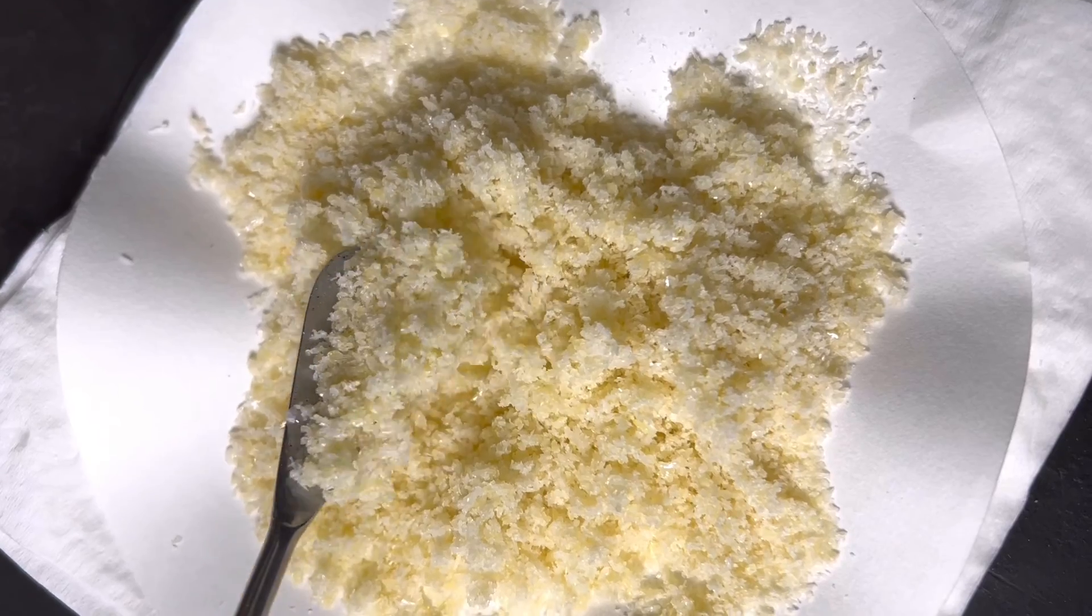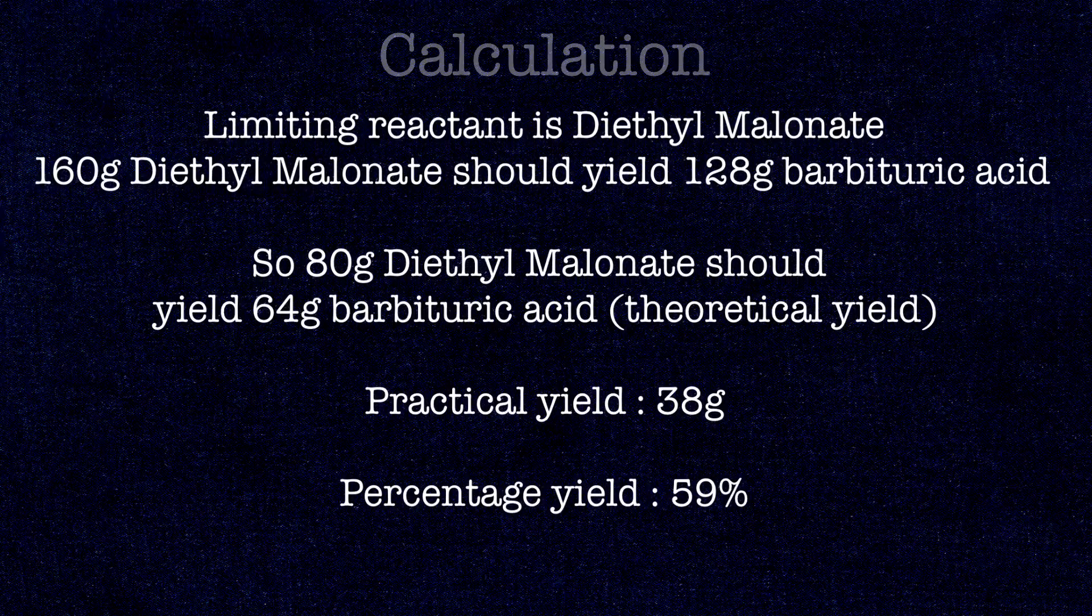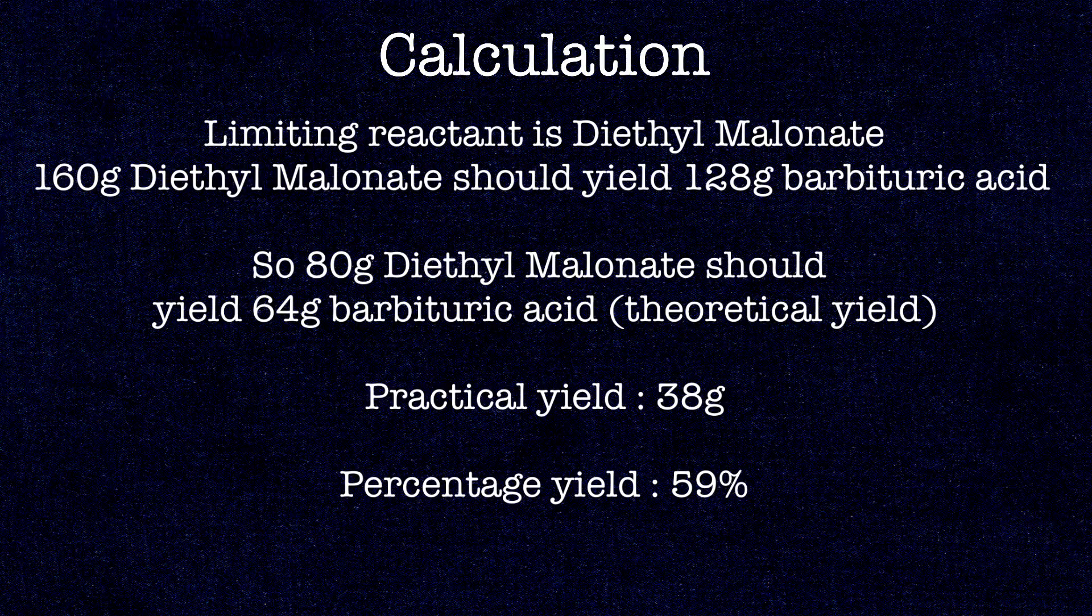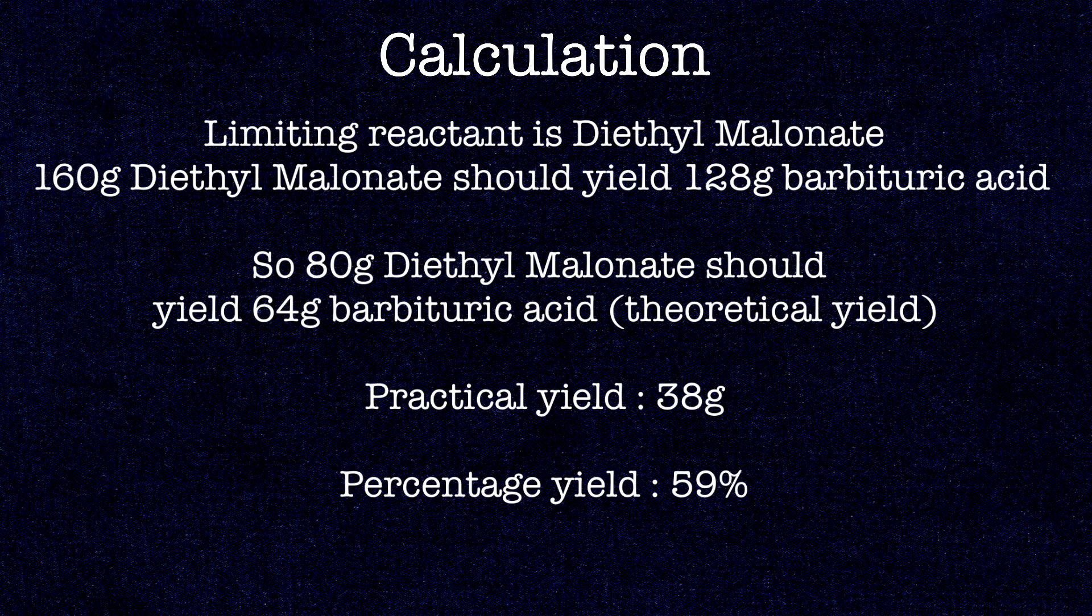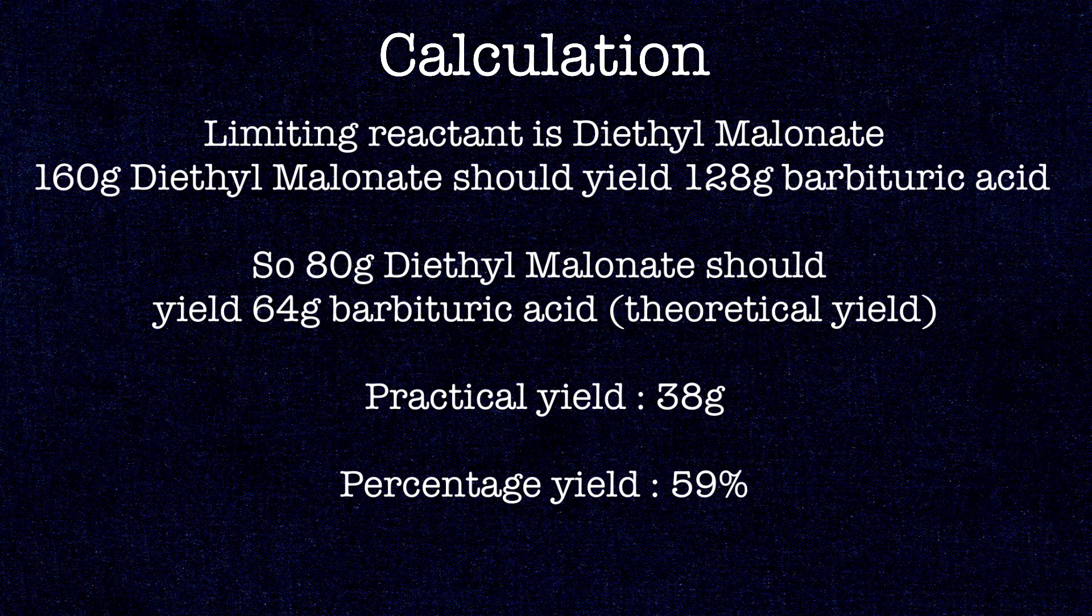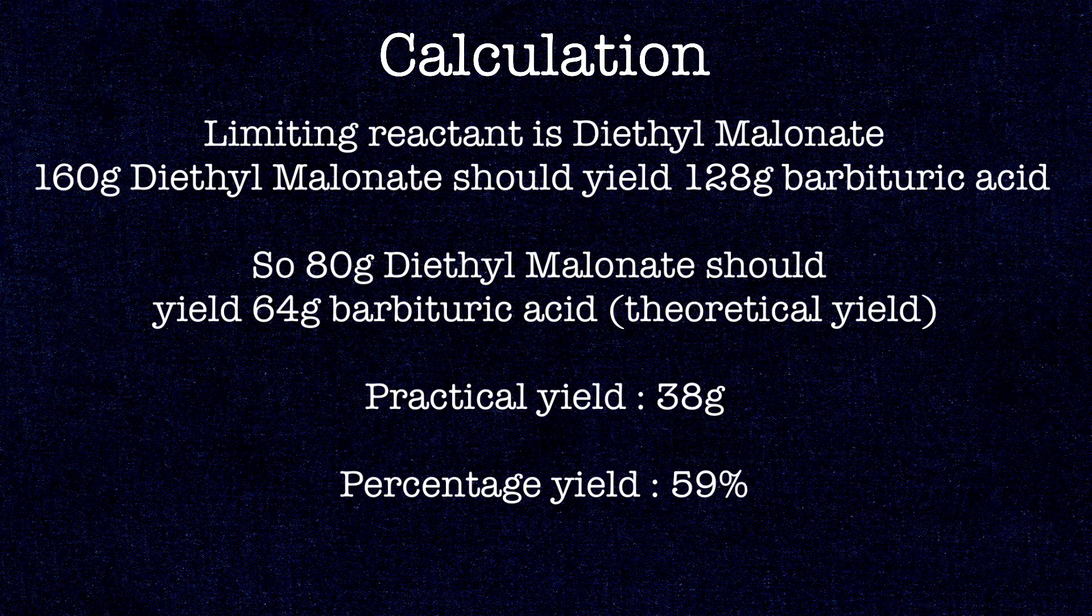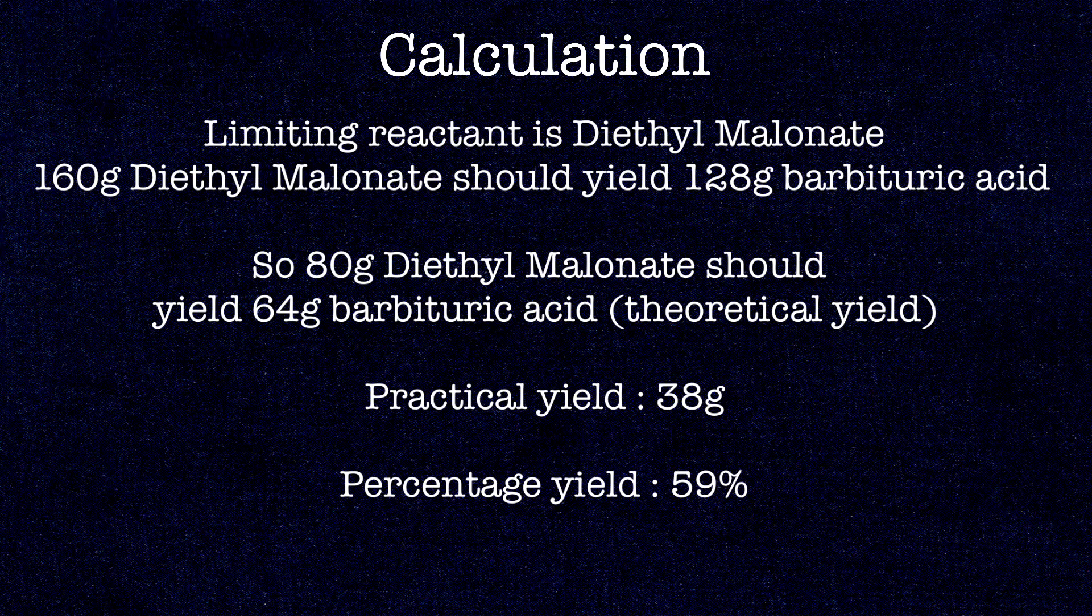Now let us move on to the calculation part. Diethyl malonate is the limiting reactant in this reaction. 160 grams of diethyl malonate should yield 128 grams of barbituric acid, so 80 grams should yield 64 grams, which is the theoretical yield. The practical yield was 38 grams. The percentage yield is 38 divided by 64 times 100, which is 59%.